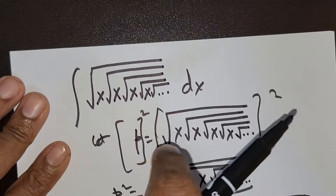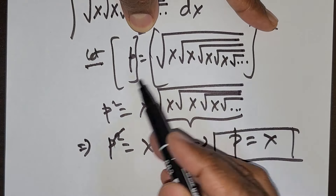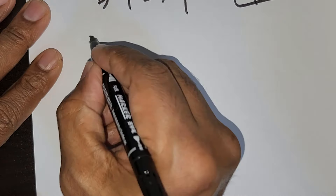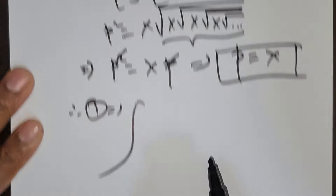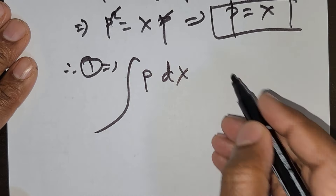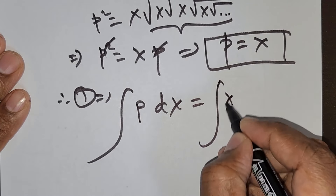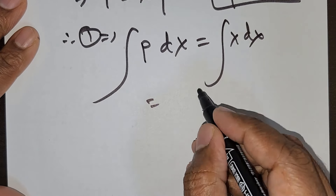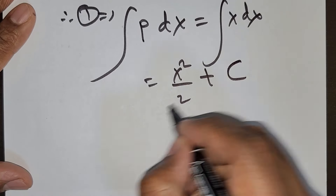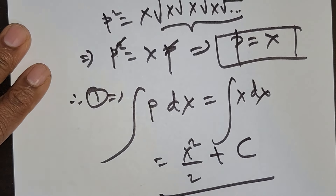So that would mean, because this is how we started — I said let P be equal to this — if we take the integral, this is going to be the integral of P dx, but P is equal to x. So this is equal to the integral of x dx, and integrating gives x squared divided by 2, plus an arbitrary constant. That's the solution for this question — it's a nice question.